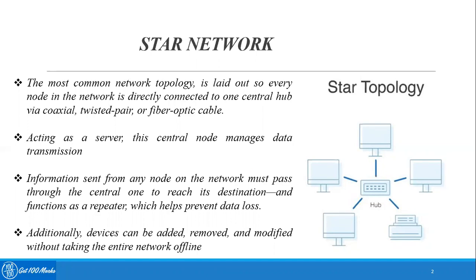Information sent from any node on the network must pass through the central hub to reach its destination. For example, if system one is passing information intended for system four, it has to pass through the central hub only. The central hub also serves as a repeater, which helps prevent data loss.